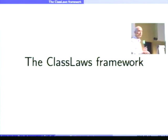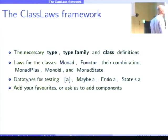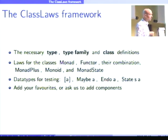So, the ClassLaws framework implements the necessary type, type family, and class definitions I just presented. We have implemented laws for Monoid, Functor, the combination of the two, Monad plus, Monad, and Monad state. And we provide some data types for testing: lists, Maybe, Endo, State. And if you have any wishes for class laws or for data types, please tell us. You can easily add them, or you can add them yourself.